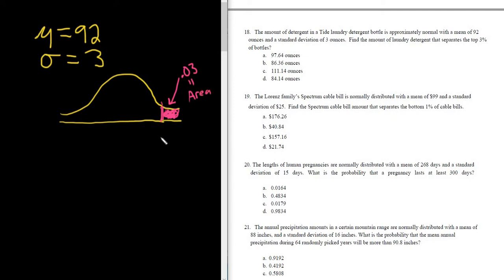And so we want this value, I'm going to call it little x, that separates the top 3%, which is here, right, 3%, from everything else. So to do that, we can use probability.